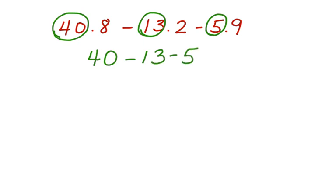Let's work in order from left to right. 40 minus 13 is 27. 27 minus 5 equals 22. So an accurate estimation here for the differences between these three numbers is 22. That would be my answer. That would be my estimate.